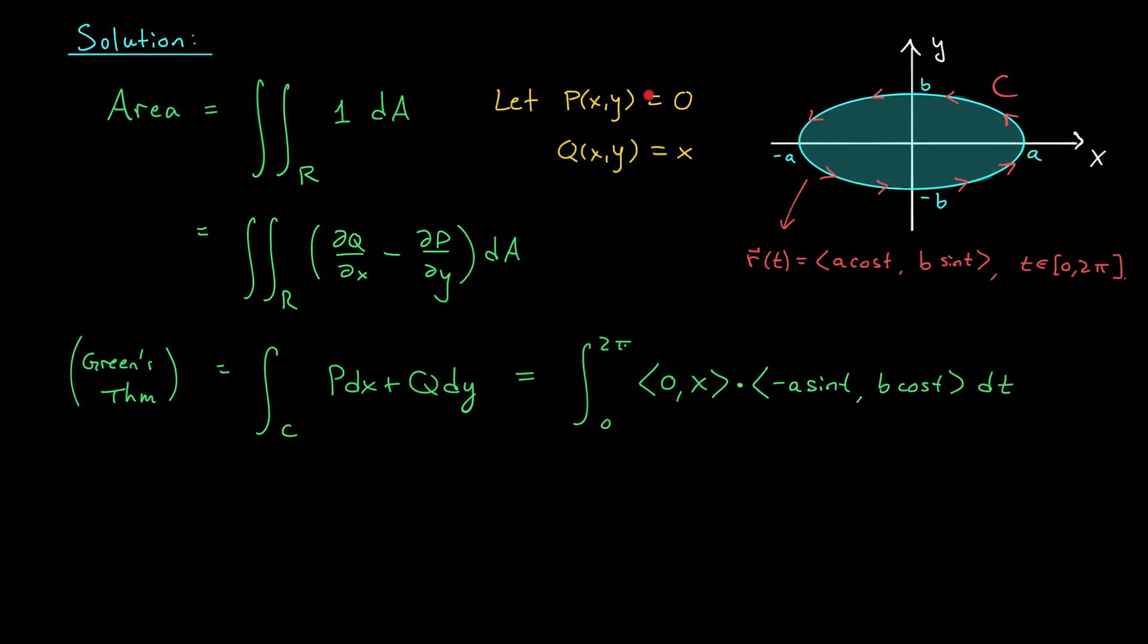Notice that since P is 0, the first term in this dot product is going to go away. We're left with the integral from 0 to 2π of x, well x here is a cos t, so a cos t times this term here, b cos t. That's ab cos²t. All right, well this is not a hard integral to solve. We can pull the ab out and we can rewrite cos² as (1 + cos 2t)/2. At this point, I know you can find an antiderivative and you can sub in the bounds and I'm sure you'll find that the answer is πab, just like we had before.